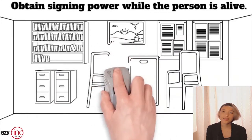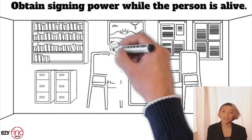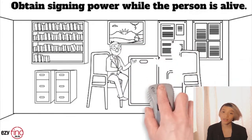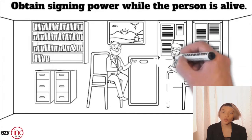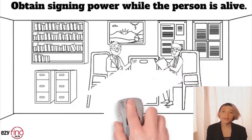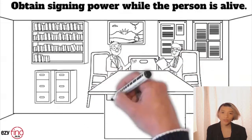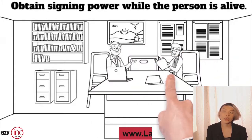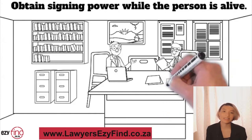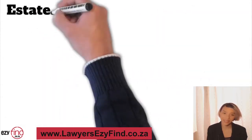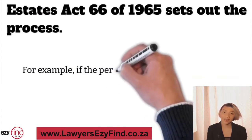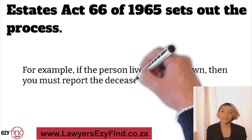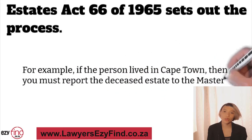The Administration of Deceased Estates Act 66 of 1965 sets out the process where someone dies in South Africa, or outside of South Africa but has assets within South Africa. The deceased estate must be reported to the master of the high court in the area where the person lived at the time of death. If the person died outside the country but left property within it, the estate must be reported at any master's office within the country.